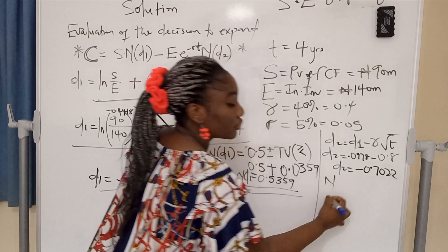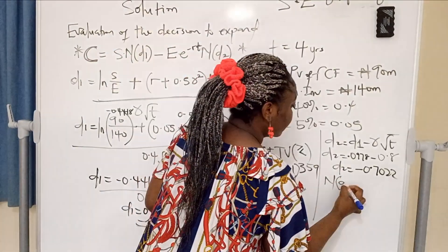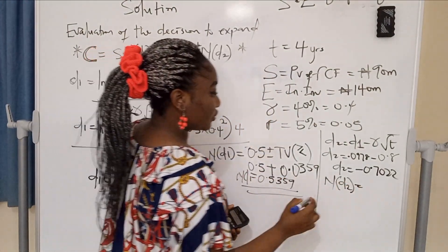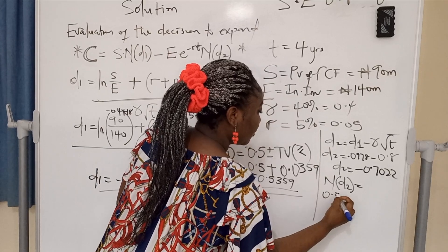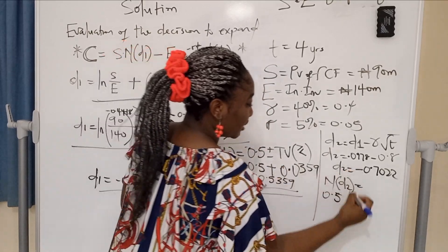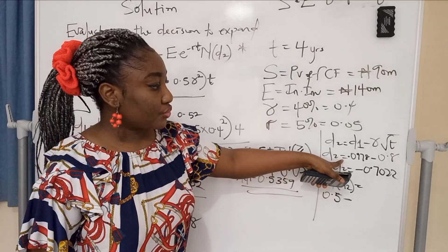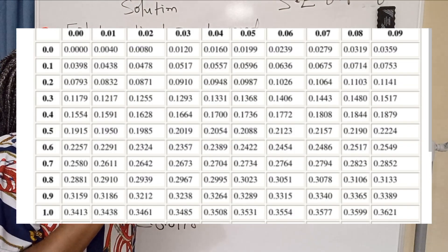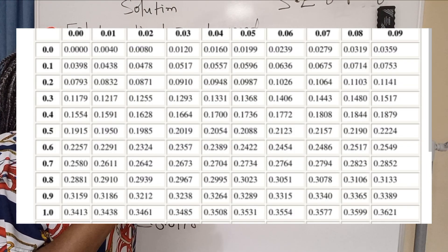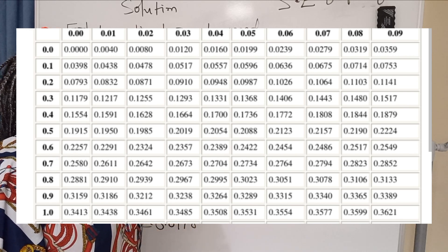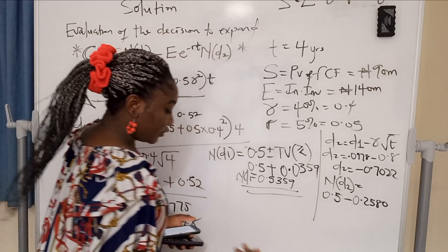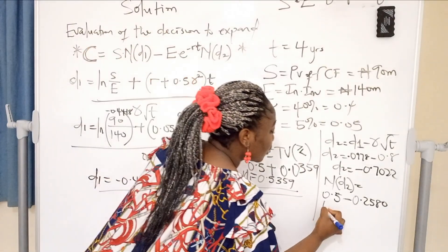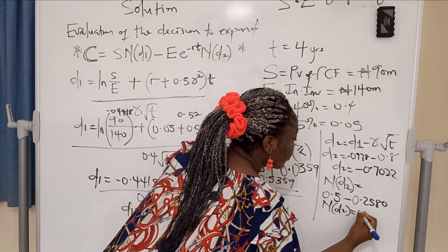Since we have a minus for D2, N(d2) equals 0.5 minus table value since it's a negative. What's our table value for D2? You're going to check 0.7 under 0.00. I've seen the 0.7 line there under 0.0. Where they intersect, you have 0.2580. So 0.5 minus 0.2580, that is 0.242. Our N(d2) equals 0.242.